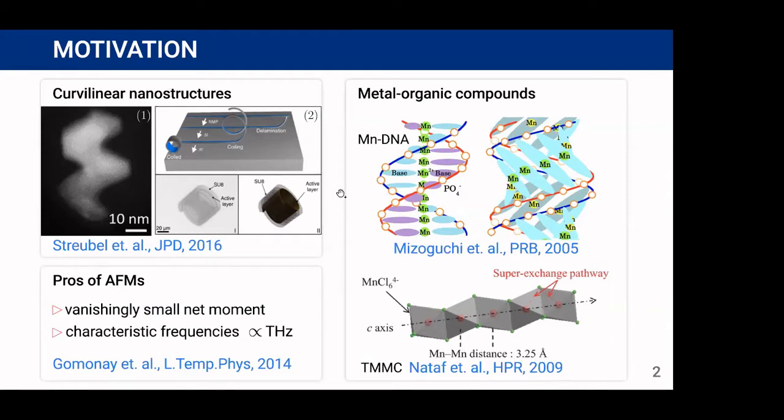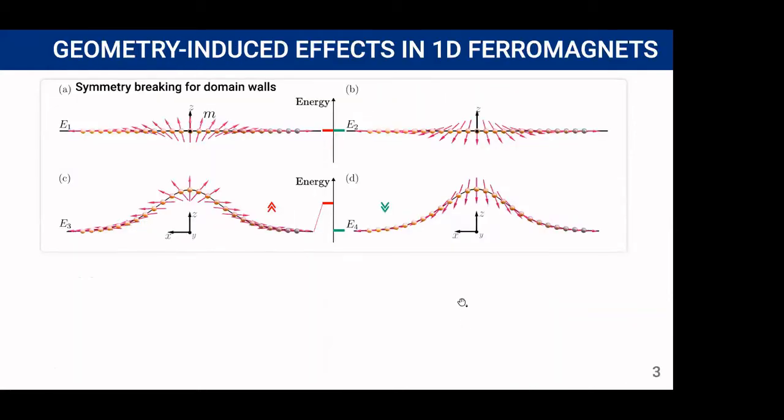Moreover, some metal organic compounds can also have antiferromagnetic ordering such as metallized molecules of DNA or molecules of tetramethyl ammonium manganese chloride. Before we start with the description of such one-dimensional antiferromagnets, let's take a look at some examples of geometry-induced effects in one-dimensional ferromagnets which are well studied.